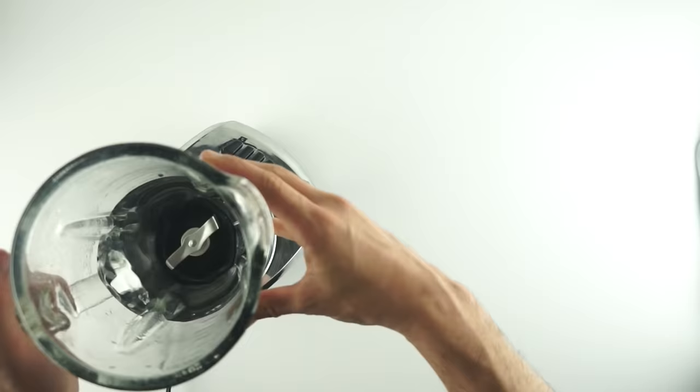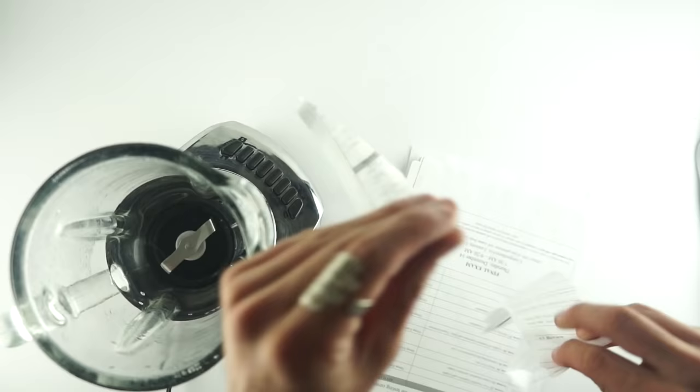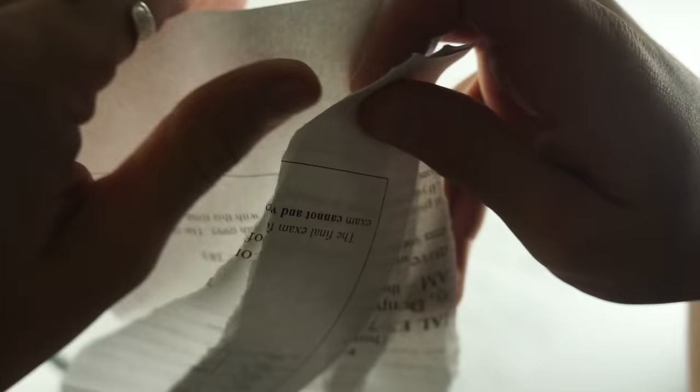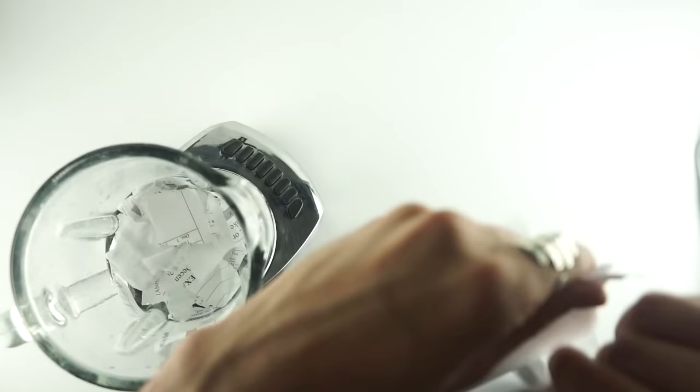To make the pulp, what you're going to do is take that recyclable paper. I'm just using like one of my roommates' old homework or something, I don't know, syllabus I think. And you just put it in a blender with water. I got the blender from a thrift store because there's going to be some wear and tear.